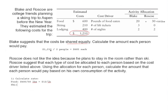For skiing, the cost is $210 and the total number of lift tickets is three (three plus zero), giving a rate of $70 per ticket. For lodging, the estimated cost is $400 and each person stays two nights for a total of four nights, giving an allocation rate of $100 per night.